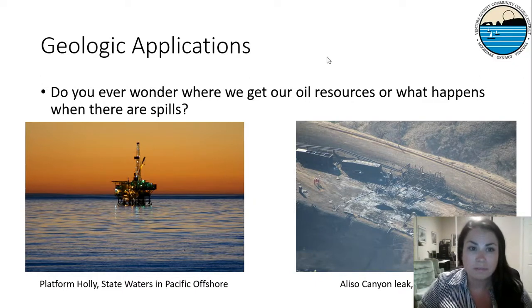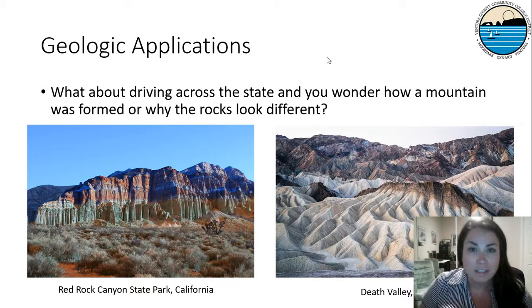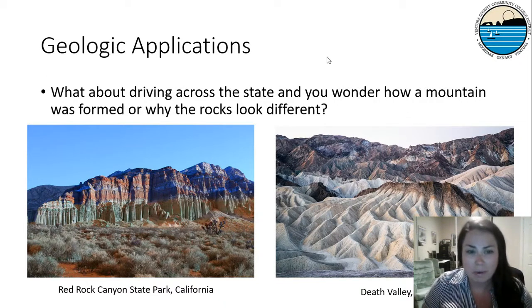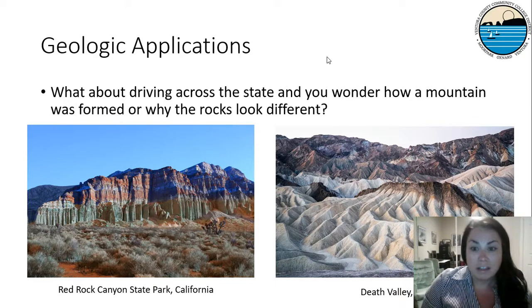Have you ever driven across a state and wondered why the mountain on the left looks different from the mountain on the right? Maybe you've driven up to the Bishop area and seen Red Rock Canyon State Park. It's beautiful, but it really stands out because you're driving through the Mojave Desert and suddenly you come across it. Maybe you've been to Death Valley — that has some really interesting geology as well. And the geology of Death Valley is so different from the geology at Red Rock Canyon, and we're going to talk about why that is.